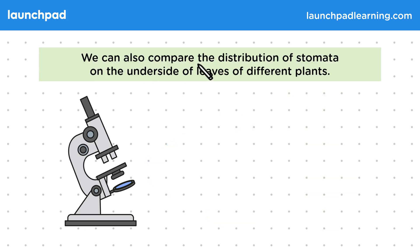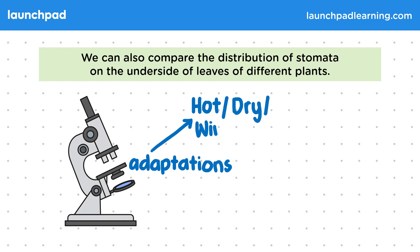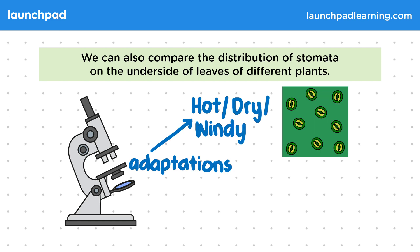We can also compare the distribution of stomata on the underside of leaves of different plants. For example, we can look at the stomata distribution on different plants that are adapted to different conditions. Plants that grow in hot, dry, or windy conditions would have a stomata distribution like this — there are relatively few stomata to help prevent water loss.